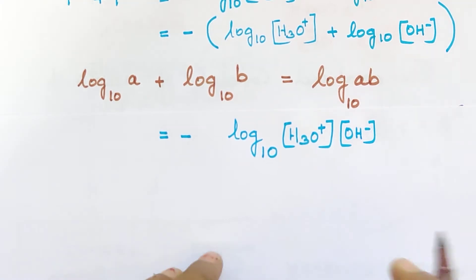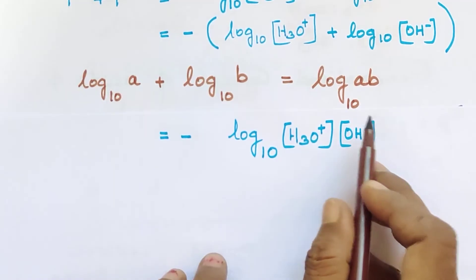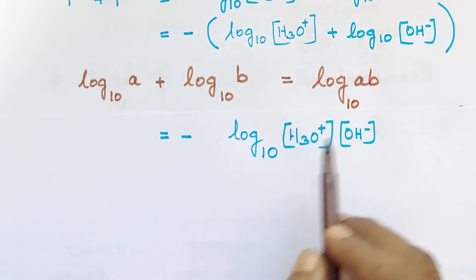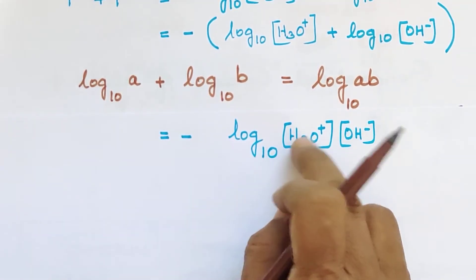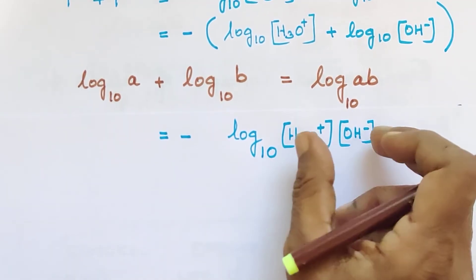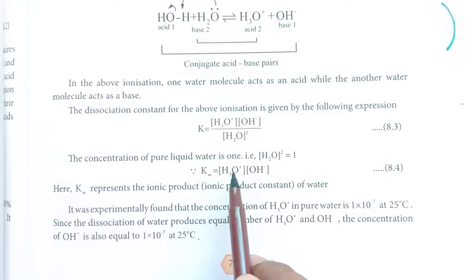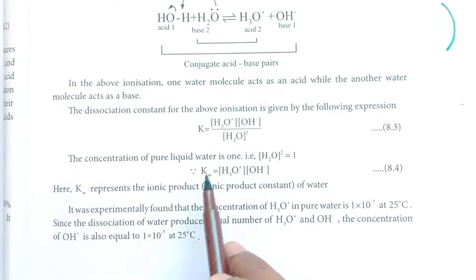So this gives us minus log base 10 of H3O⁺ concentration multiplied by OH⁻ concentration. You can immediately recognize this expression — this is the ionic product of water. In the textbook, H3O⁺ concentration into OH⁻ concentration is given by Kw, which is the ionic product of water.